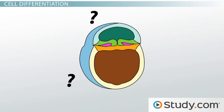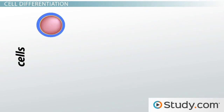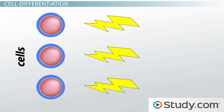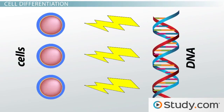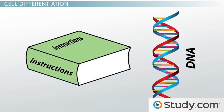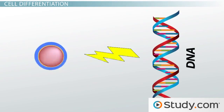So, how does it happen? Well, throughout development, your cells receive signals that tell them what to do. These signals come from the genes — the ones in your DNA — that are inside each cell. A cell's genes are kind of like its instruction booklet. They tell the cell where to go and what to do.